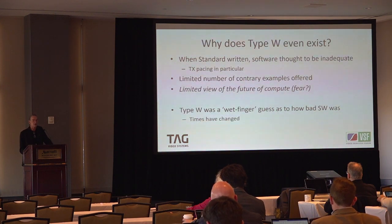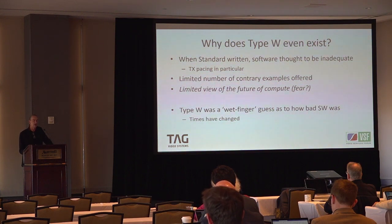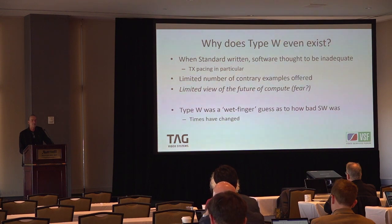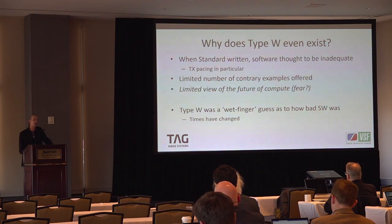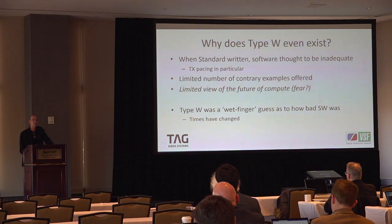Why does Type W even exist? We thought software was going to be too bursty and jittery. So when we wrote the standard we implemented the Type W profile, and because we didn't have contrary examples at the time, we didn't have the confidence to say 'let's just make everything narrowish.' We embraced the state of the art of that day — perhaps with limited foresight. Writing a normative standard, you can't go far out on the limb of prediction. It's always better to go back and fix something once it's real. This was a bit of a wet-finger guess as to how bad software would be.